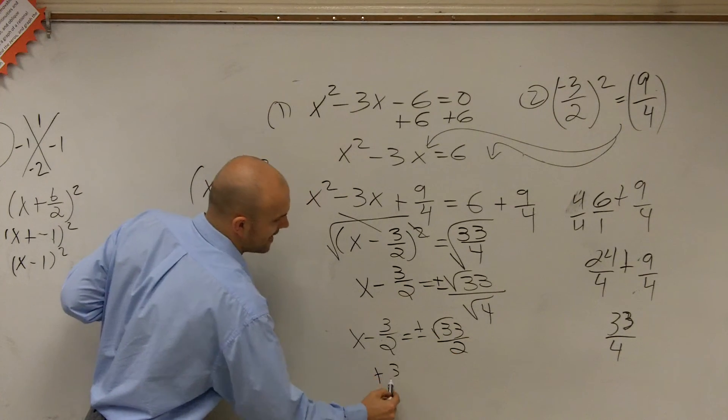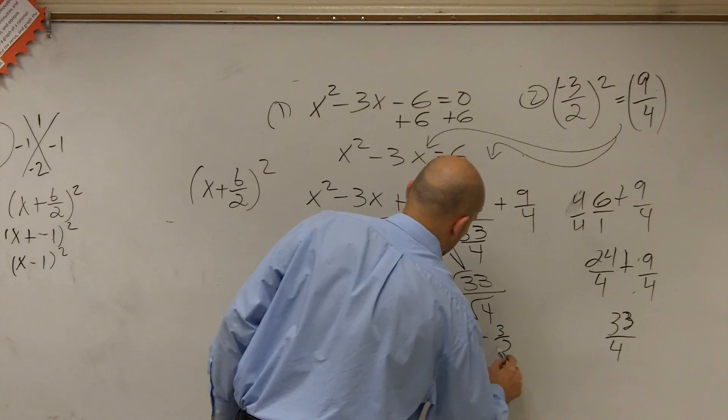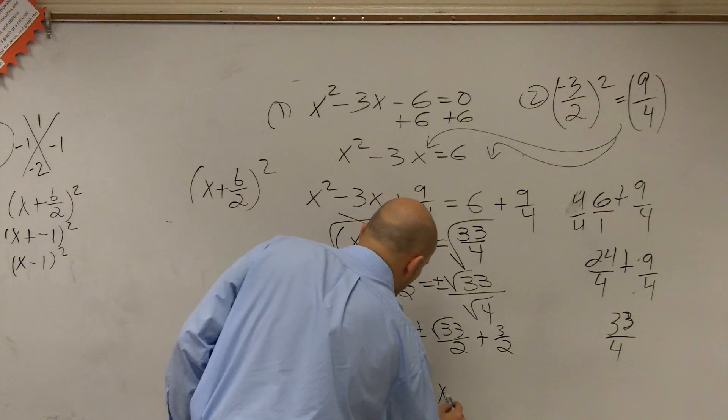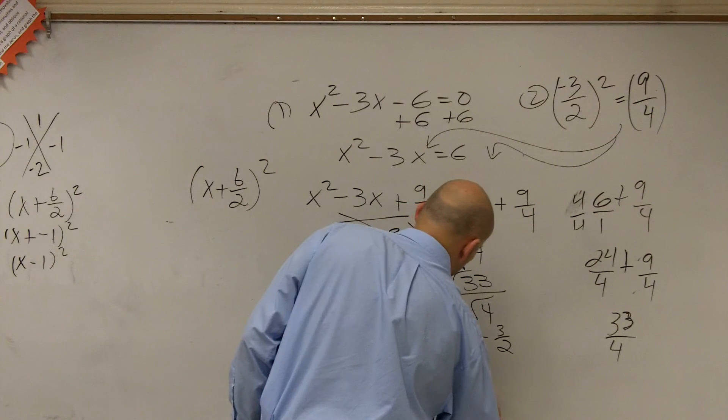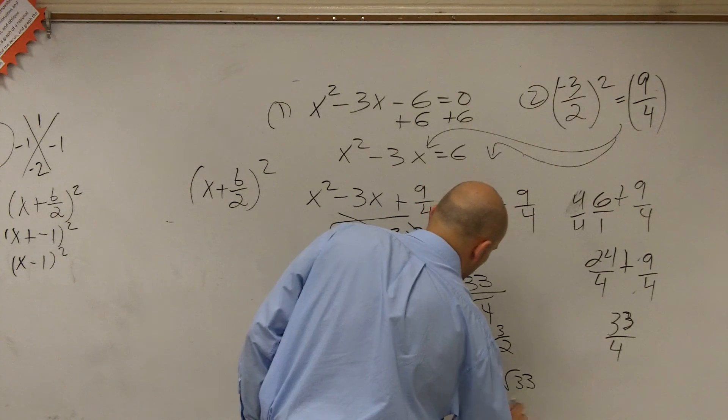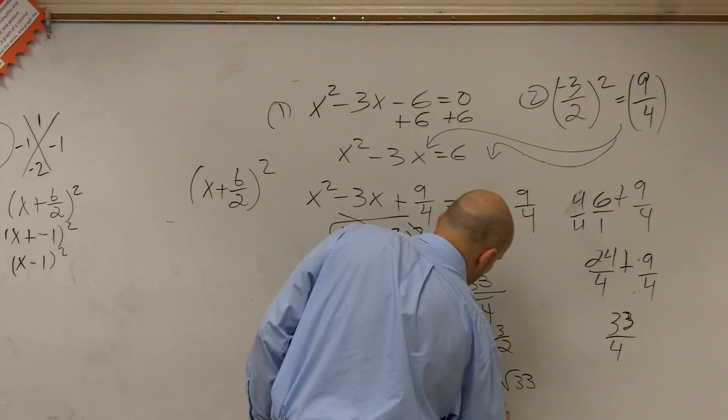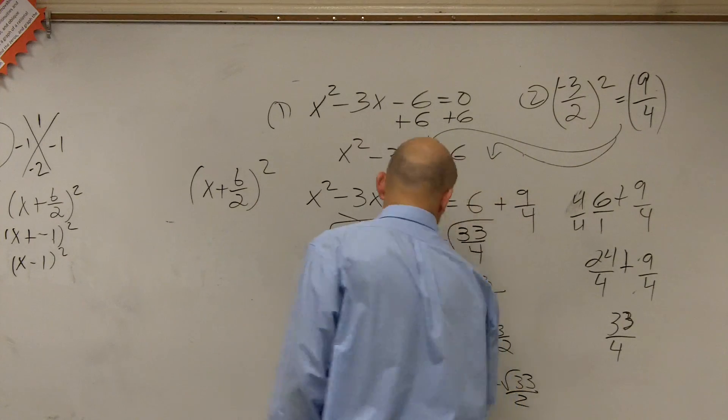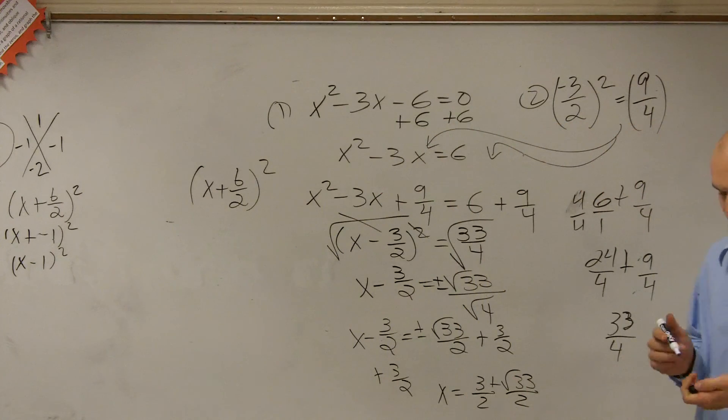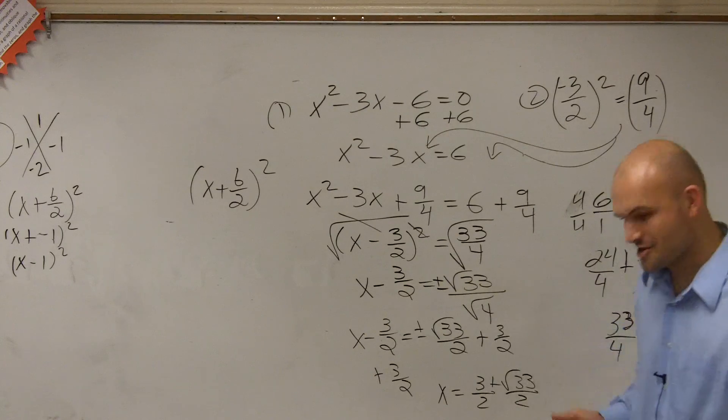Add 3 halves. Final answer: x equals 3 plus or minus the square root of 33 divided by 2. There we go.